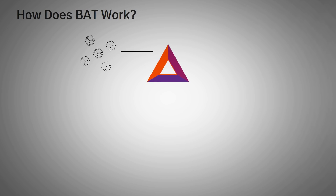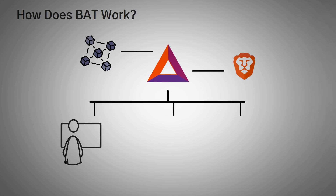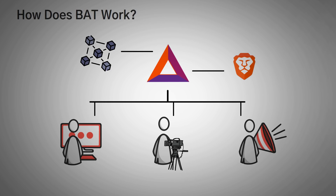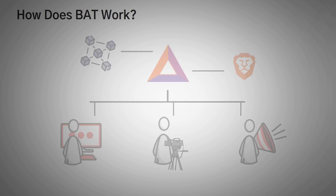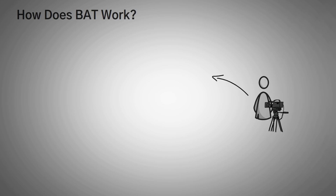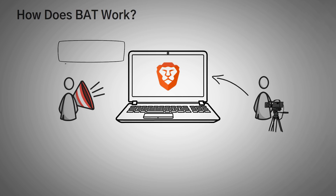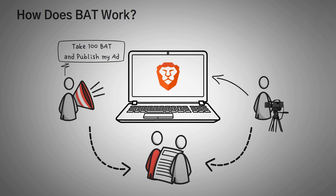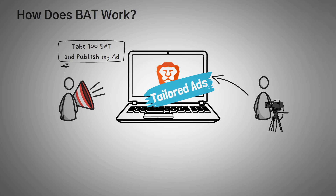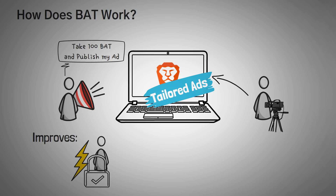Now let's get into how Basic Attention Token actually works. It runs hand in hand with the Ethereum blockchain and the Brave web browser to facilitate transactions between readers, content creators, and advertisers. When content creators publish a post on their website or post a YouTube video, advertisers offer a certain number of Basic Attention Tokens for ad space on that content, after which they will reach an agreement based on the attention score obtained by measuring users' engagement. This basically means the ads are more tailored to the users and give advertisers the best bang for their buck, which also improves speed, privacy, and security of the browser.